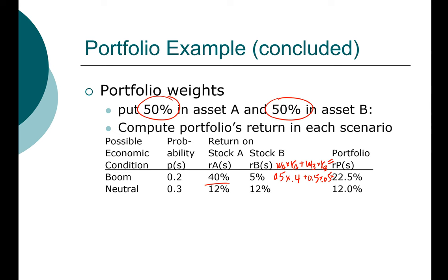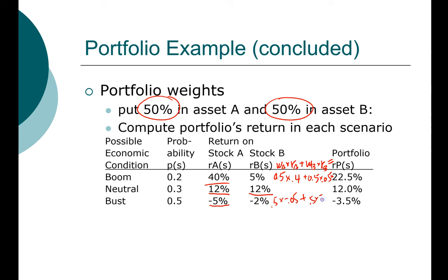In a neutral market, half our money in Stock A gets 12% and half in Stock B also gets 12%, so 100% of our money earns 12% — that is our second scenario return. In the bust scenario, Stock A loses 5% and Stock B loses 2%. Half our investment loses 5% and half loses 2%, so overall our portfolio loses 3.5%.